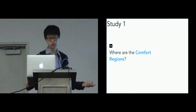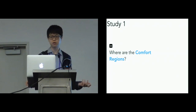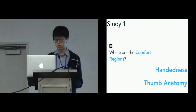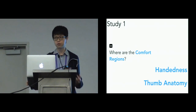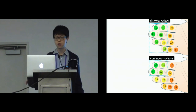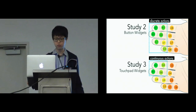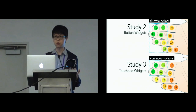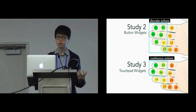In Study 1, we found that handedness and thumb anatomy are the two main factors affecting comfort regions. Therefore, in the following studies, we only ask participants to perform actions with their dominant hands, and we shrink the interaction area in Studies 2 and 3 by using finger segments with physical comfort ratings higher than three.